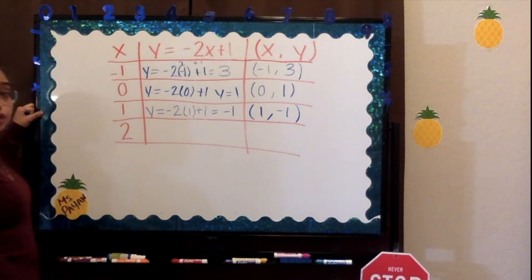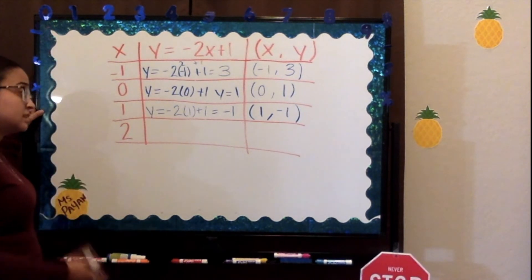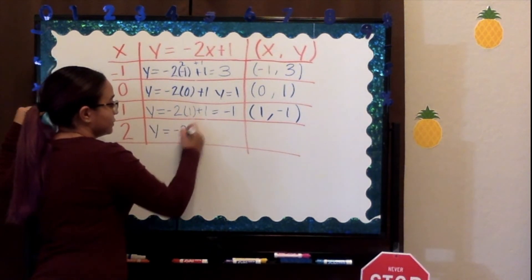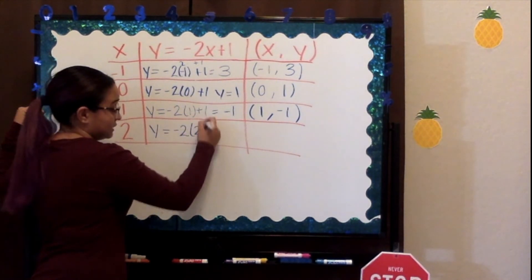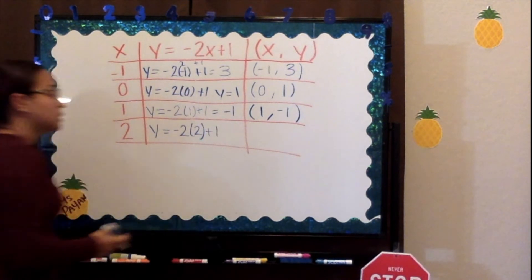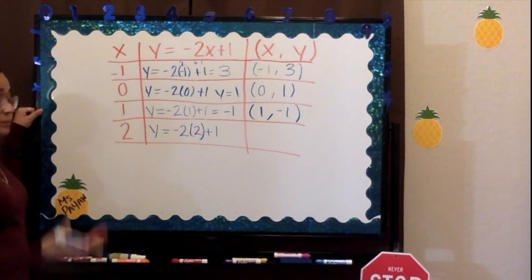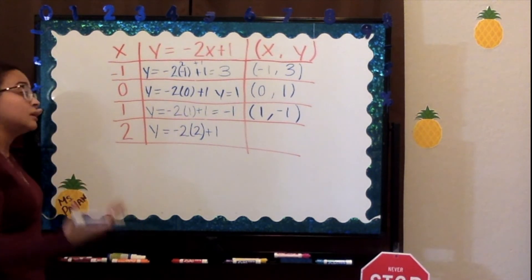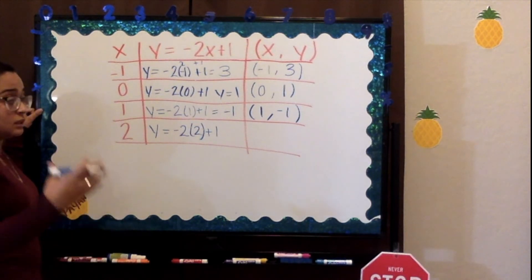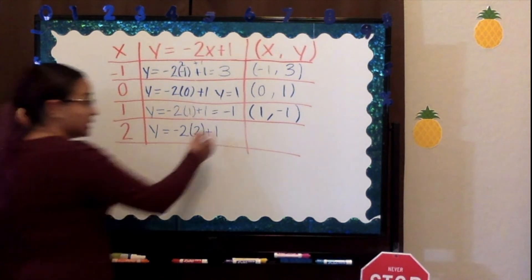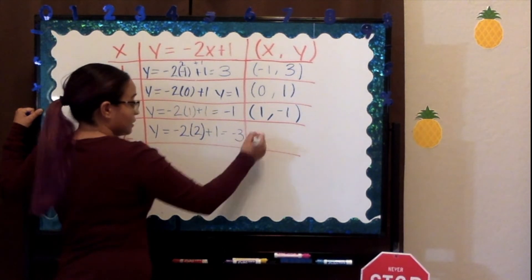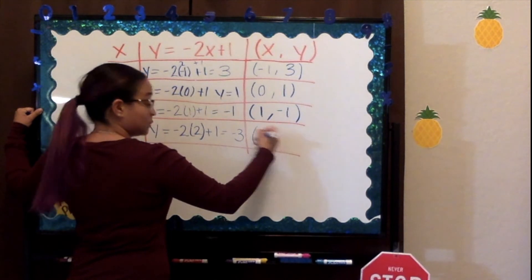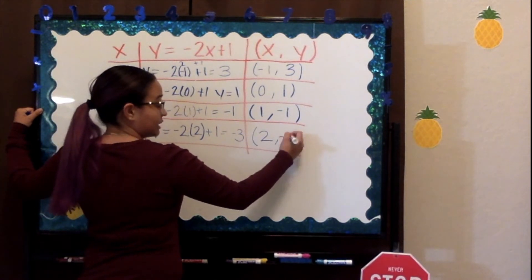Let's do our last value for x, which is 2. We have y equals negative 2 times 2 plus 1. 2 times 2 equals 4. Our answer is negative because you're multiplying a positive and a negative number. So we have negative 4 plus 1, which leaves us with negative 3. We have 2 for x and negative 3 for y.